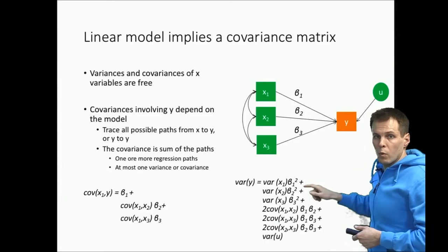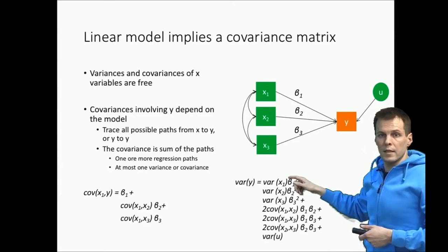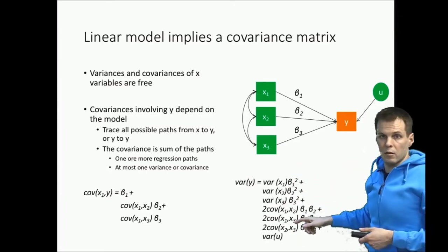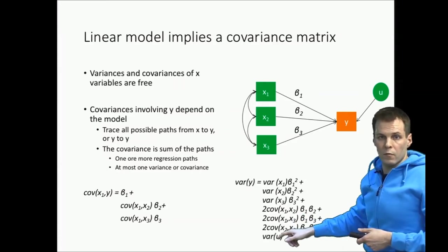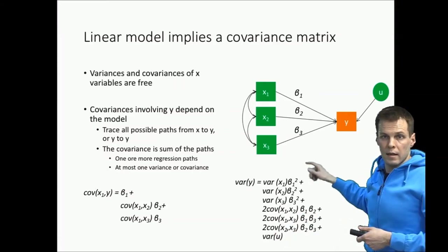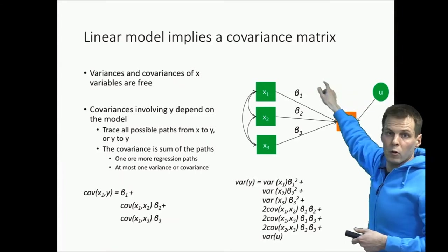So the variation of y is the sum of all these variances and covariances of the explanatory variables plus the variance of u, the error term that is uncorrelated with all the explanatory variables.